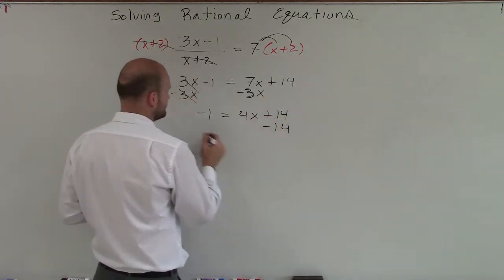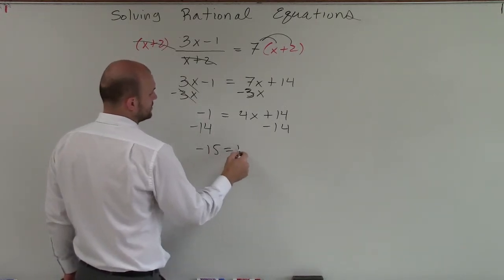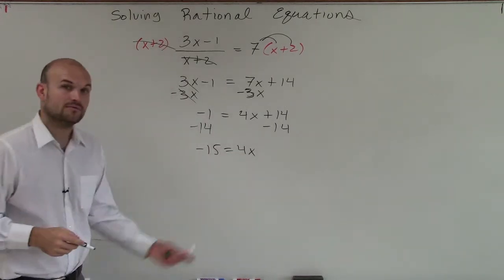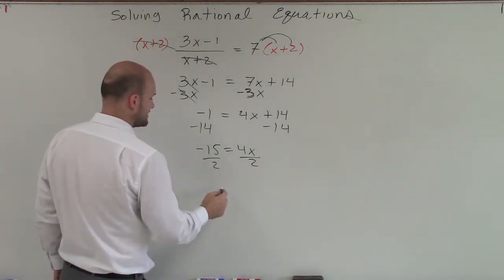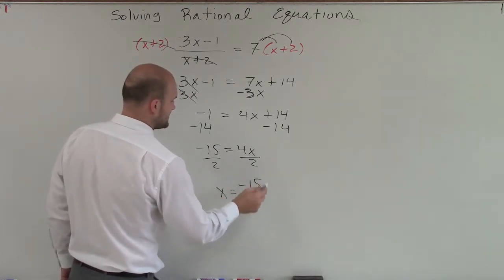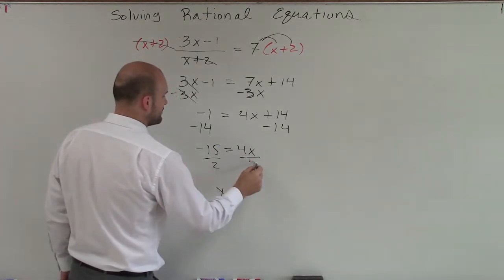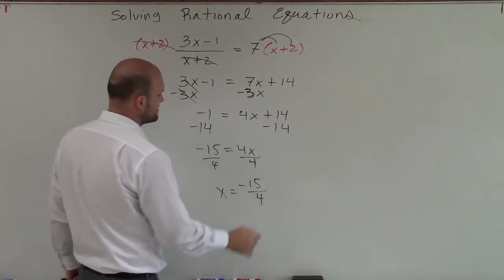Now, I subtract by 14, and I get negative 15 equals 4x. Now, just simply need to divide by 4. And I'll just flip this over and say x equals negative 15 divided by 4.